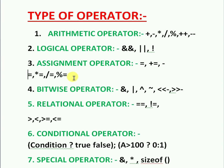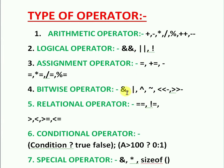Next, bitwise operators. Bitwise AND (&) converts the value of both operands into binary form and performs the AND operation bit by bit. Bitwise OR (|) converts the value of both operands into binary form and performs the OR operation bit by bit.